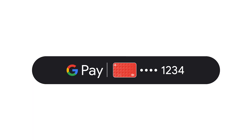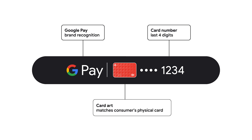Before we jump into the implementation details, let me give you an overview of all the features the Dynamic Button offers. The button shows dynamic metadata of the user's last-used form of payment. This includes the card art matching the user's physical card and the last four digits. In the future, we might add even more useful metadata for a user to recognize their last-used payment method.